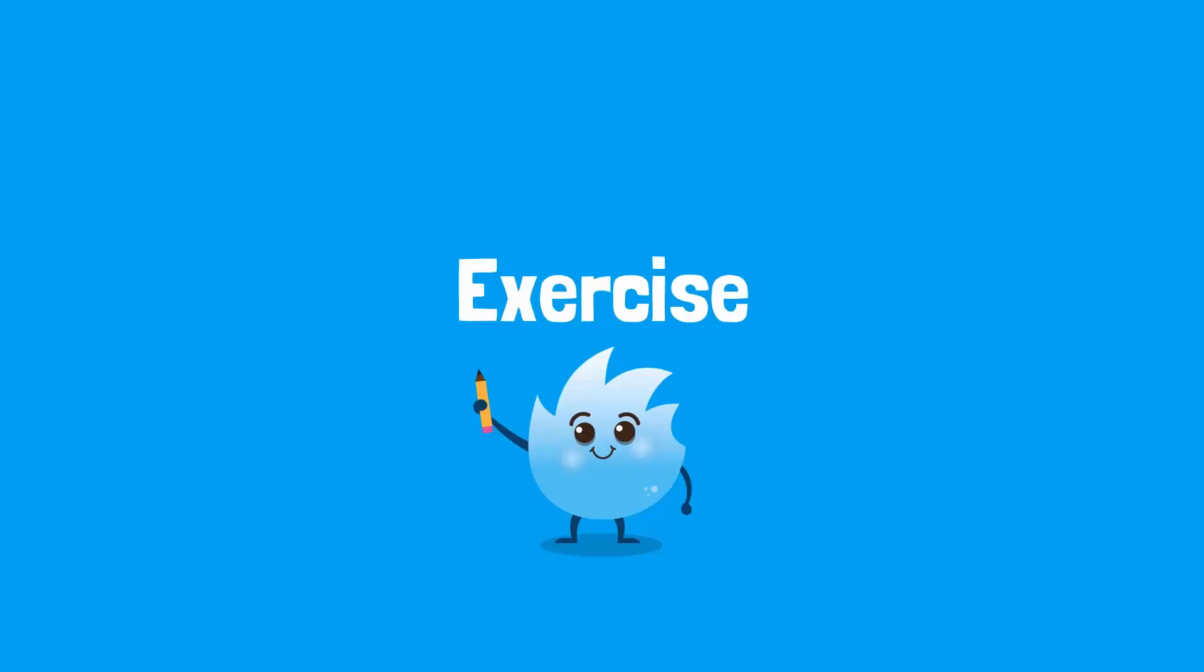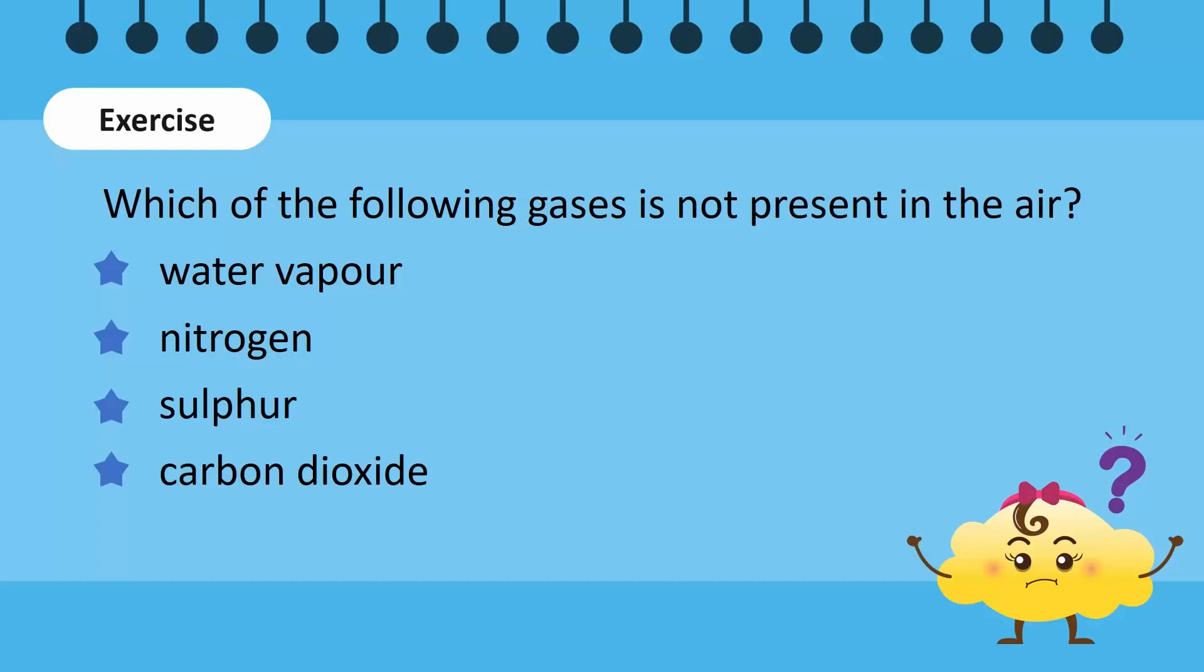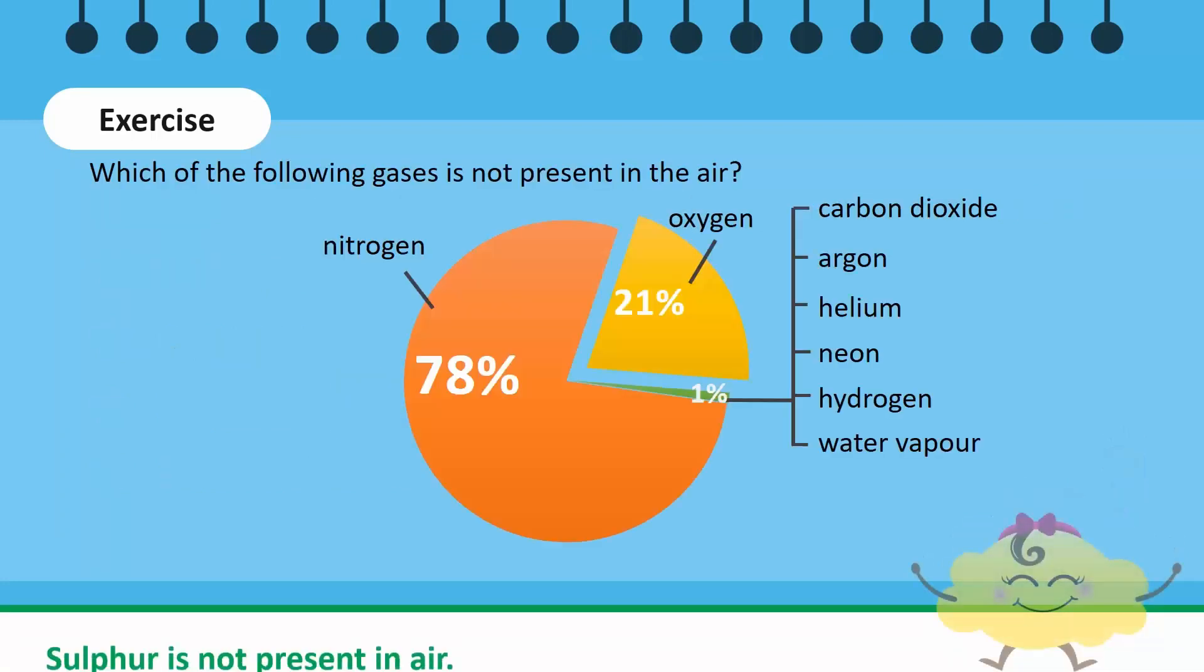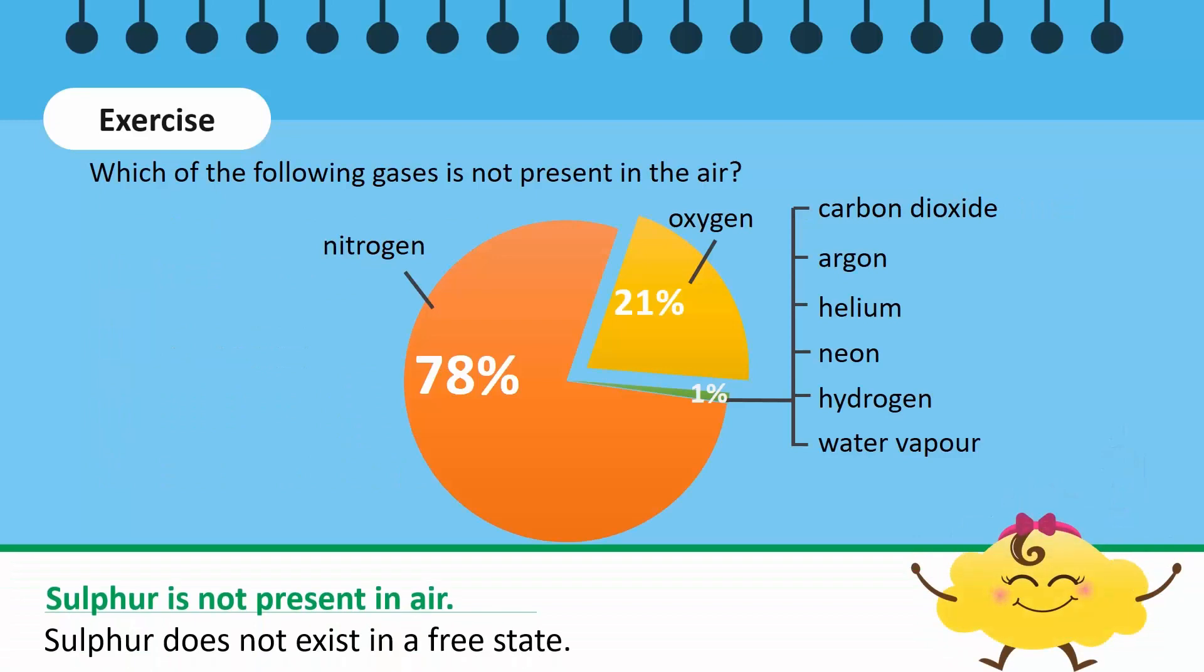Let's do an exercise. Which of the following gases is not present in the air? According to the detailed pie chart showing the composition of air, it can be seen that sulfur is not a component of air.